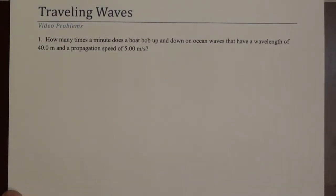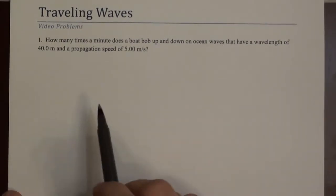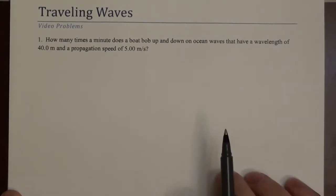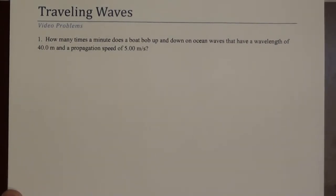Here are a couple problems relating to traveling waves. The first problem asks, how many times per minute does a boat bob up and down on ocean waves that have a wavelength of 40 meters and a propagation speed of 5 meters per second?